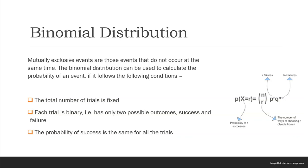Next we have binomial distribution. In this binomial distribution, the total number of trials is fixed, and each trial is binary, so it can be either success or failure. The probability of success is the same for all the trials.